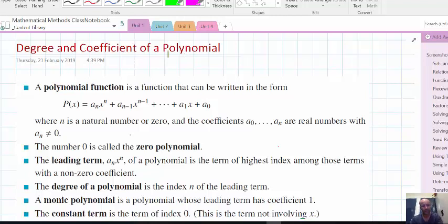We're looking at degree and coefficient of a polynomial. A polynomial is a type of function. It's a type of function with many terms. Loosely, polynomial means many terms.